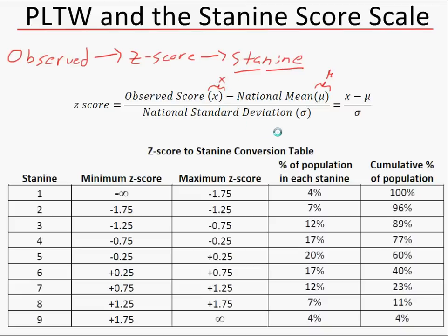Then we have the national standard deviation — basically, on average, how far are the observed scores from the mean score? That standard deviation is sigma (σ). To develop the individual student z-score, we take the observed score x, subtract the national mean μ, and divide that value by the standard deviation σ. That gives us a z-score.